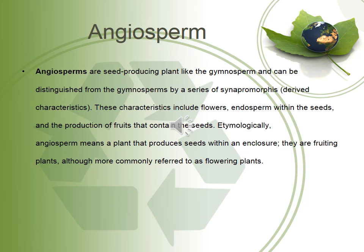Angiosperms are seed-producing plants, like gymnosperms, and can be distinguished from gymnosperms by a series of shared morphologies. These characteristics include flowers, the sperm within the seeds, and the production of fruits that contain the seeds. Etymologically, angiosperms means a plant that produces seeds within an enclosure. They are folding plants, although more commonly referred to as flowering plants.